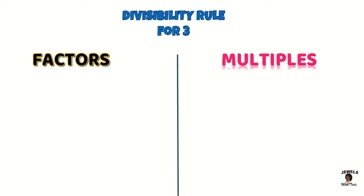Now, here's another thing you need to remember when looking at this rule. You must be able to tell the difference between your factors and the multiples of three. Remember that when you are listing the factors of three, factors are the numbers that can divide or that we can multiply to get three. The first factor of every number is one and the last factor is always that number itself. Since three is a prime number, it only has two factors: one and three.